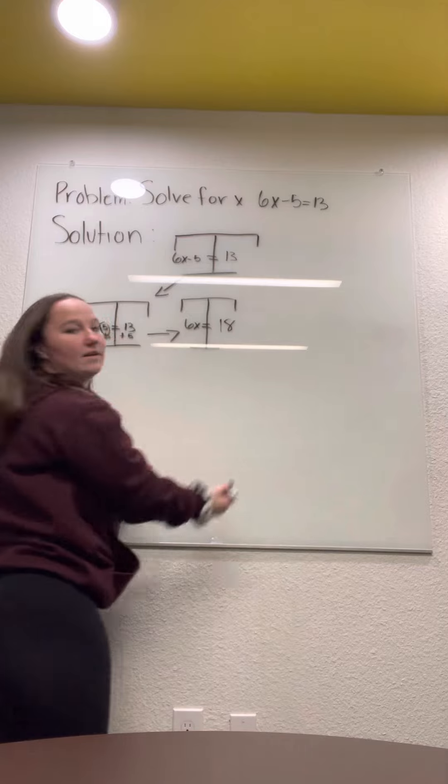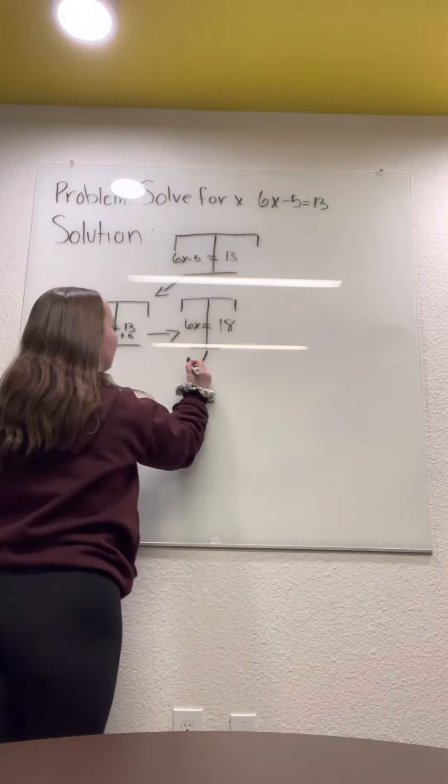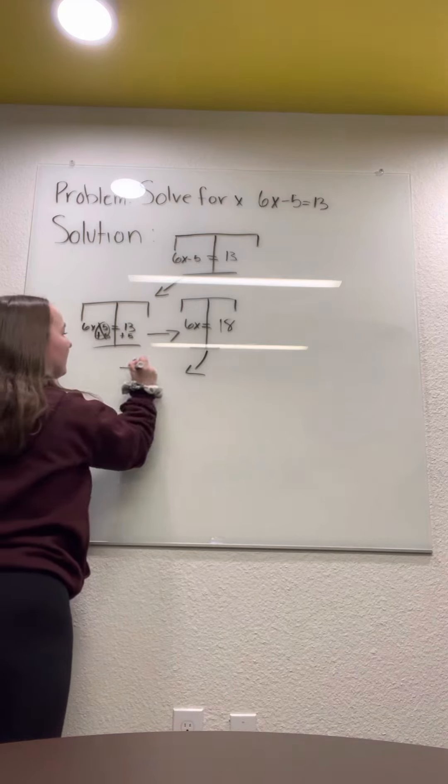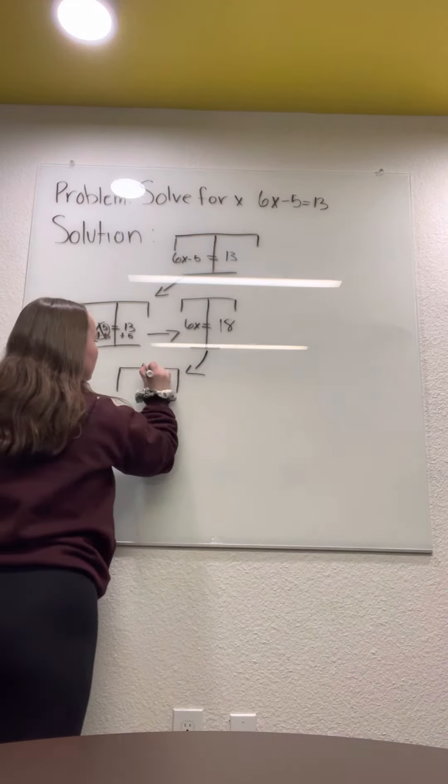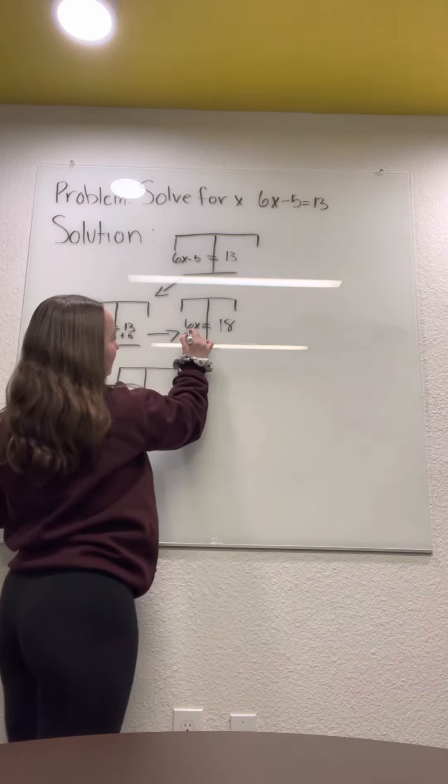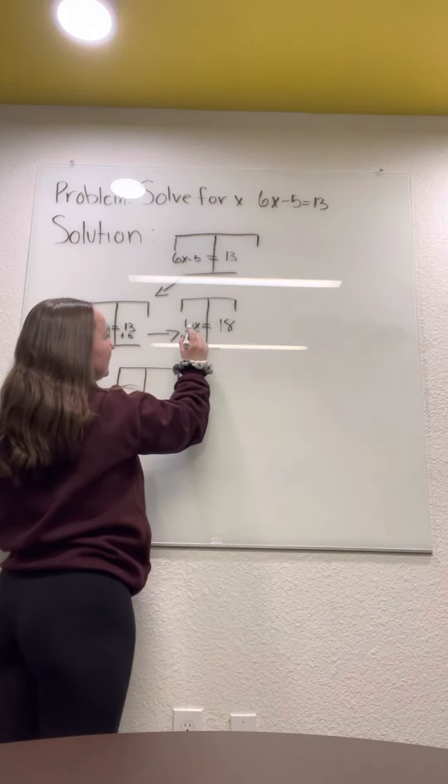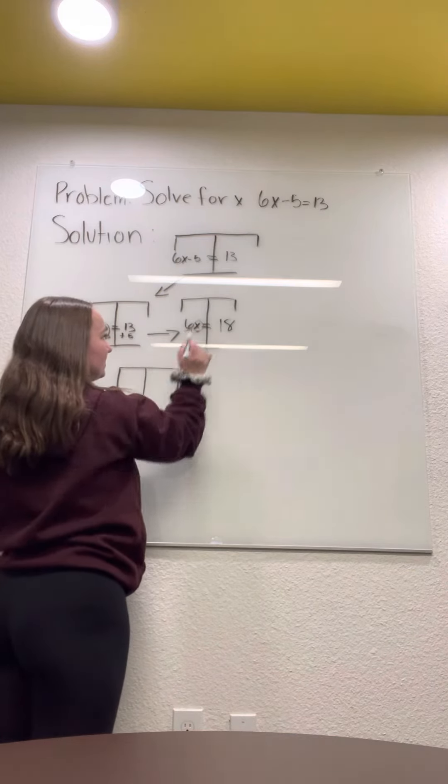And then we are going to want to bring this down, make another way chart. And since there's a 6 in front of the x, we are going to want to divide this 6 into the 18 so we can get x by itself.